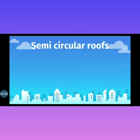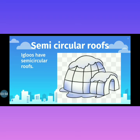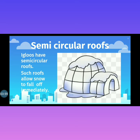Next, semi-circular roofs, जैसे की igloo की होती हैं। Igloos have semi-circular roofs. Such roofs allow snow to fall off immediately. ऐसी semi-circular roof होने की वज़ह से, जो snow है, वो immediately उसके नीचे गिर जाती है।